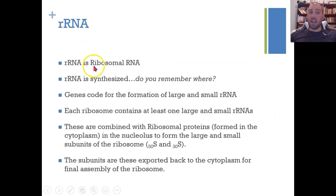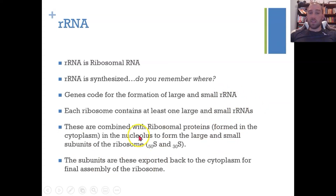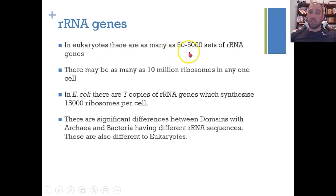Ribosomal RNA (rRNA): we have genes that code for the large and small subunits of ribosomal RNA, and each ribosome has at least one large and one small rRNA subunit. The rRNAs are combined with ribosomal proteins formed in the cytoplasm, in the nucleus, to form the large and small subunits. The subunits are then exported back to the cytoplasm to be assembled into the final ribosome.